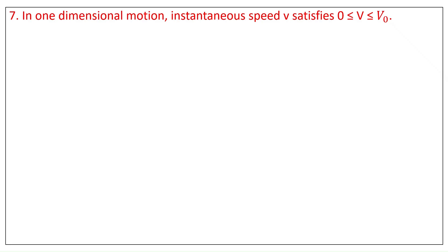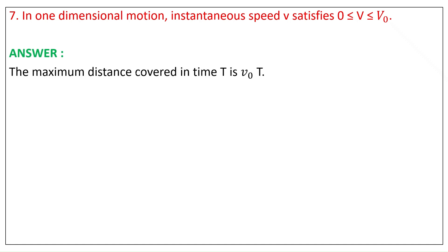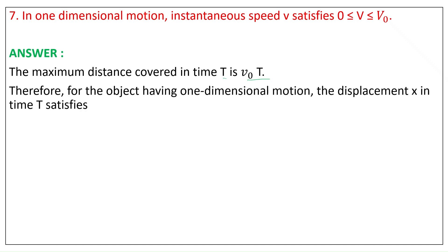Question 7. In one-dimensional motion, instantaneous speed V satisfies 0 less than or equal to V, V less than or equal to V_naught. The maximum distance covered in time T is V_naught times T. Therefore, for an object having one-dimensional motion, the displacement X in time T satisfies minus V_naught T less than X, X less than V_naught T.